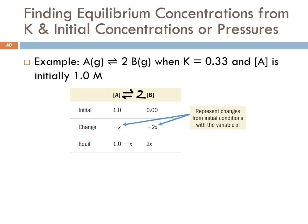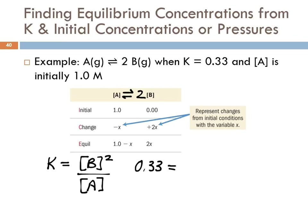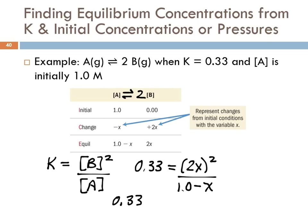Now we write the equilibrium expression: K = [B]² / [A]. We put in numbers: 0.33 = (2X)² / (1.0 − X). Expanding, we get 0.33(1.0 − X) = 4X². We have an equation to solve — you can use the quadratic formula, or you can use the solver function on your calculator.